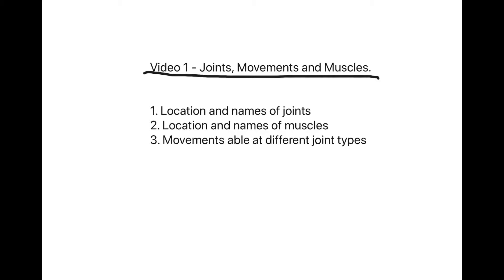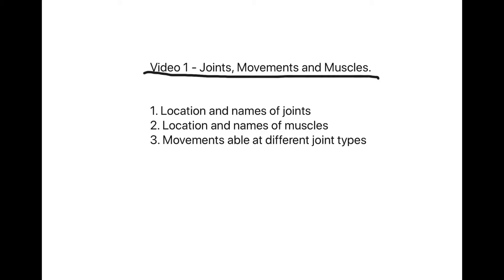So this is our first video of the A-level specification for OCR PE. In this first video we are going to look at the joints, the movements at those joints, and the muscles producing those movements — the location and names of joints, location and names of the muscles, and the movements possible at each joint type.